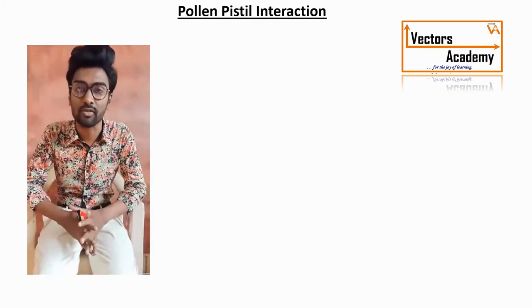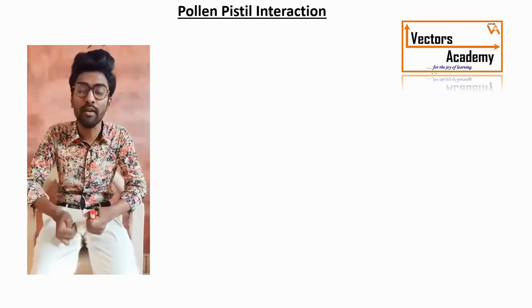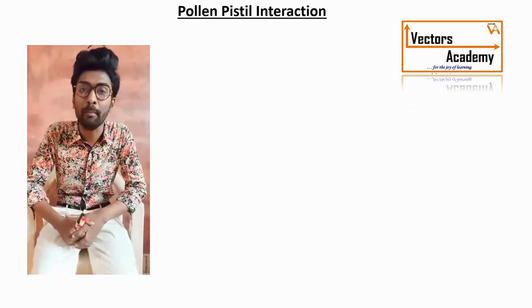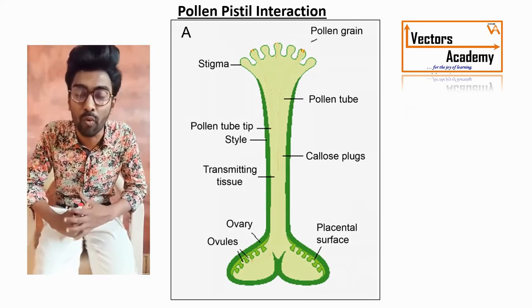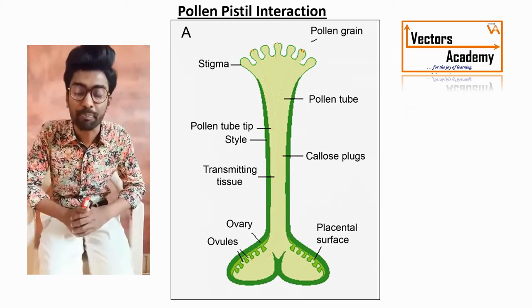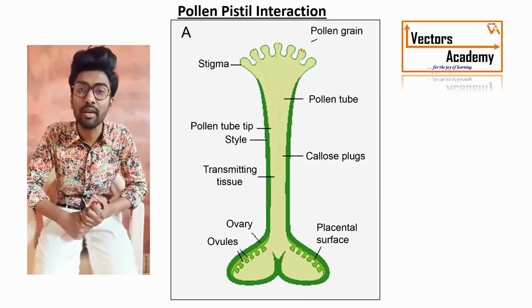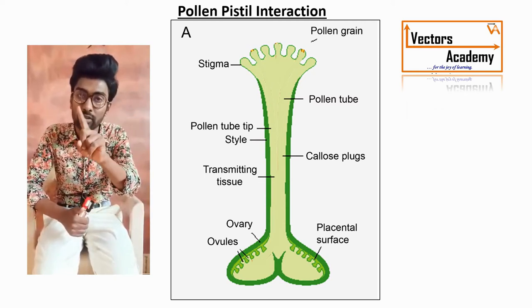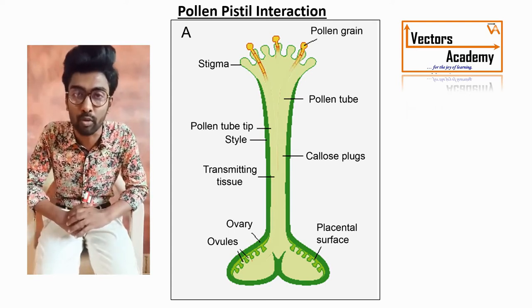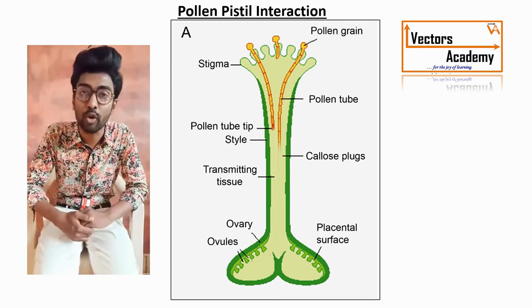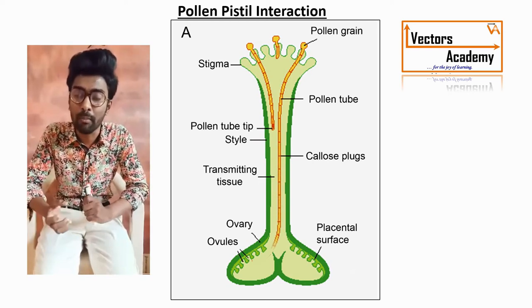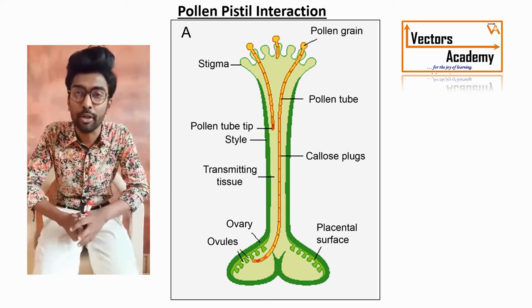The next topic is pollen-pistil interaction. Pollen is the pollen grain coming from the anther, and pistil is the gynoecium containing style, stigma, and ovary. In pollen-pistil interaction, first the pollen grain gets deposited on the stigma of the flower and leads to the formation of a long pollen tube through the germination pore. Whenever the cytoplasm volume increases, the exine ruptures from the germination pore and leads to the formation of a pollen tube.